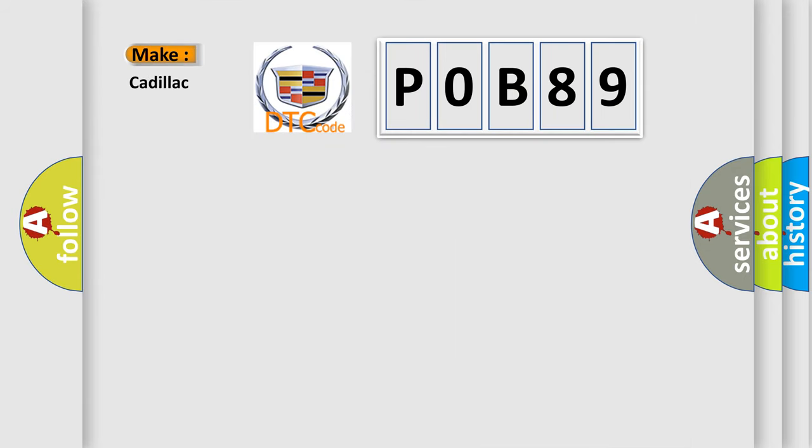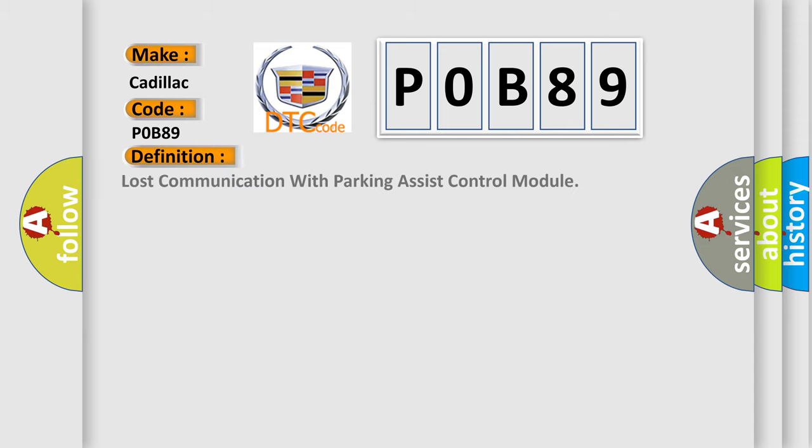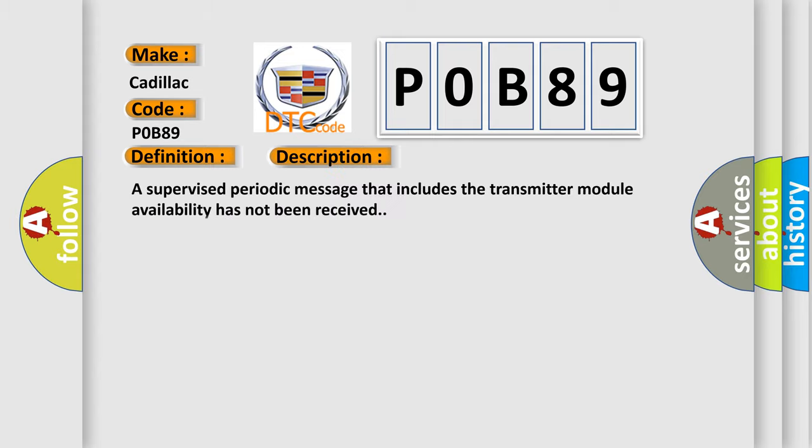So, what does the Diagnostic Trouble Code POB89 interpret specifically for Cadillac car manufacturers? The basic definition is Lost communication with parking assist control module. And now this is a short description of this DTC code.